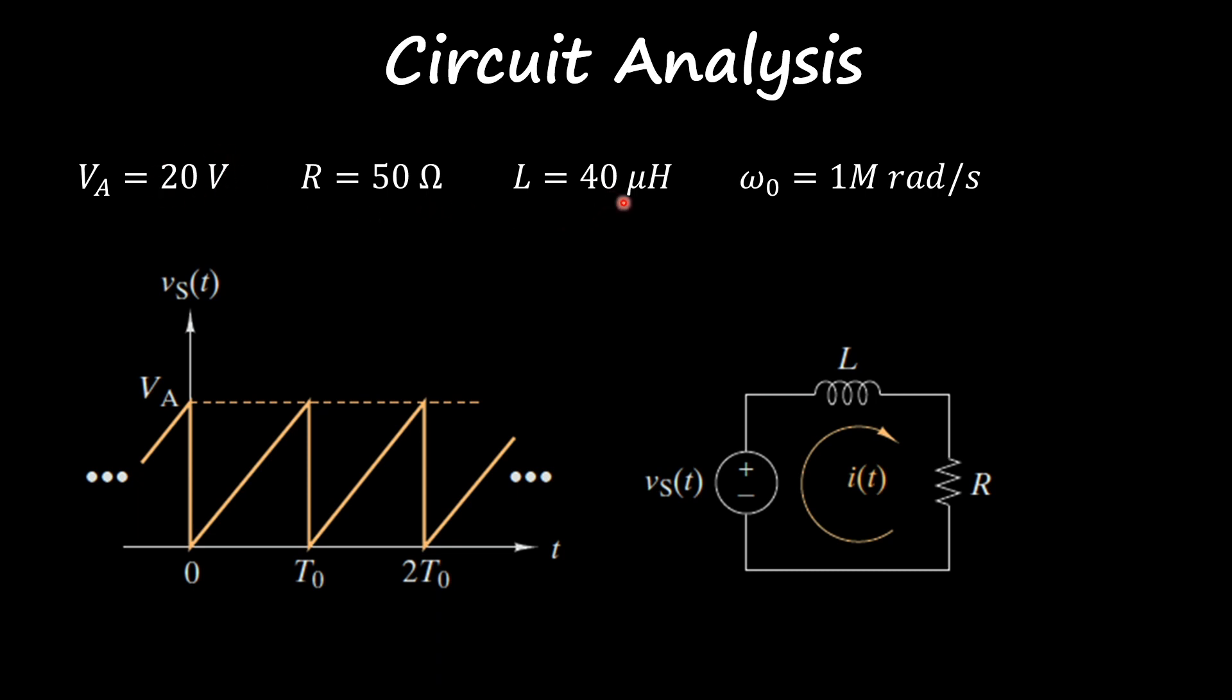A 40 microhenrys inductor, and we're going to have one mega radians per second of our frequency. We're going to try to find the current that flows through this circuit, and we're going to focus on the first four non-zero terms of our Fourier series.